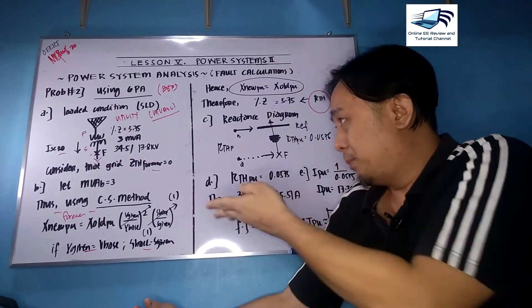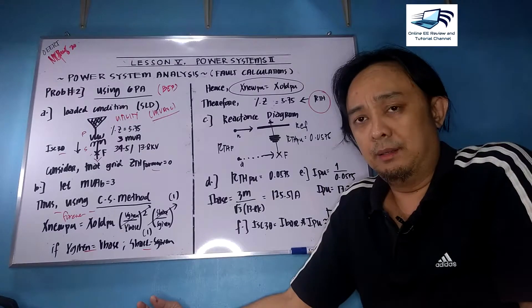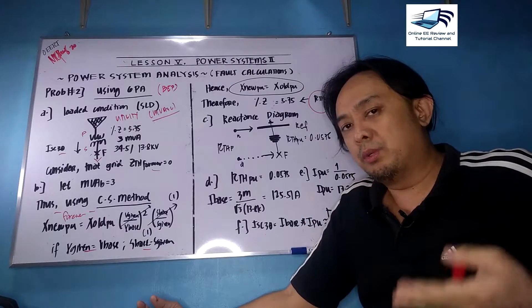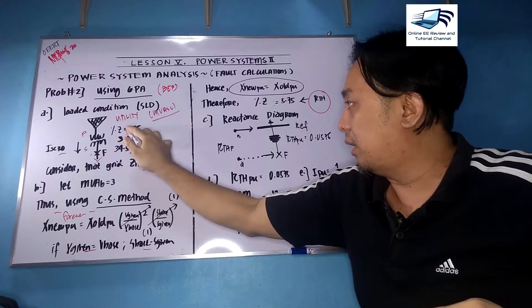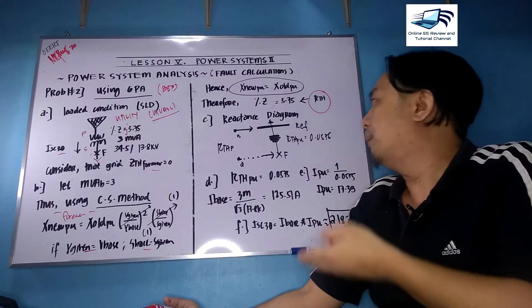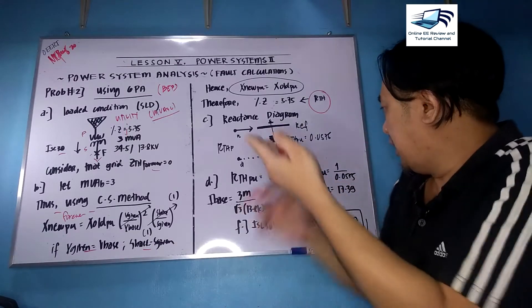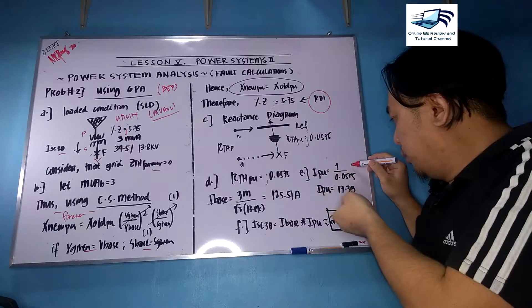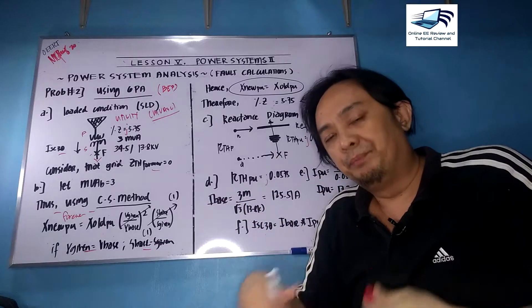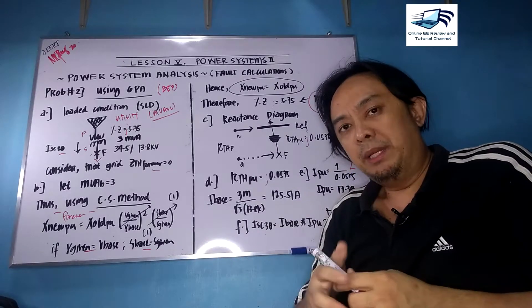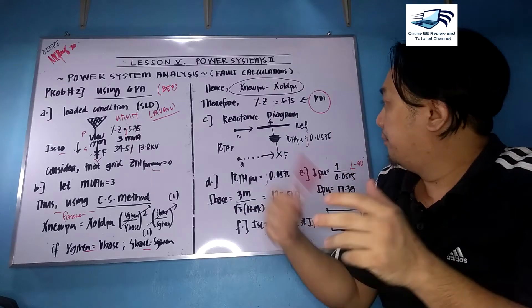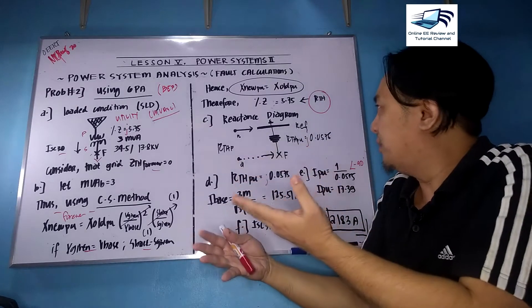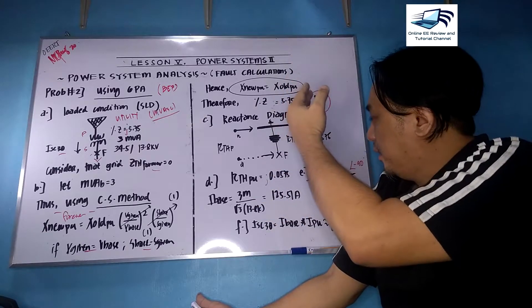Although it's not mentioned, your transformer must be an inductive component, but we are following the given. It's not mentioned that the percentage impedance is j, so I use 5.75 as purely resistive. If you want to use j, no problem. What will just happen is your R_PU will have a bar angle of negative 90, but as I mentioned in the last problem, our main goal here is the magnitude part only. So you can use j or r, but in my case I use r.